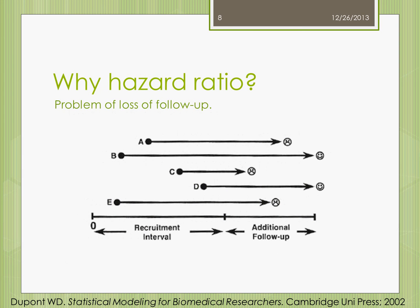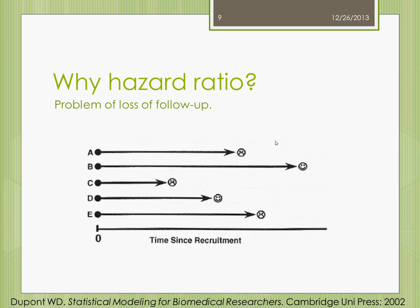Here is a general example of a trial with survival analysis, where several patients were recruited at different times. A smiling face denotes a patient who remained alive at the end of the study, and a sad face means the patient died during the study before the end. Patients A, C, and E died during the study, while patients B and D remained alive. In another example, patient D remained alive but we don't know what happened afterward — this is loss to follow-up, also called censored data, though that term is now considered somewhat old.